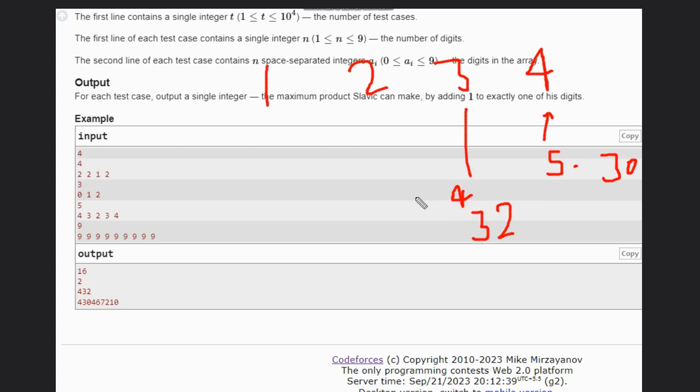So it will become 32. What if we increase the 2 to 3? If we increase this, then 4 times 3 is 12, times 3 is 36. What if we increase the 1 to 2? Then what will happen? 4 times 3 is 12...